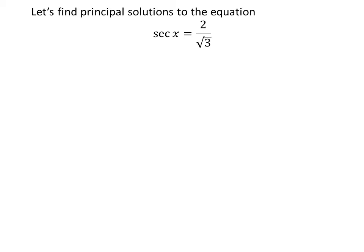We know the solutions to the trigonometric equation for which x is greater than or equal to 0 and less than 2 times pi are the principal solutions.